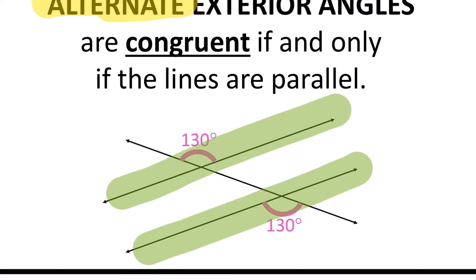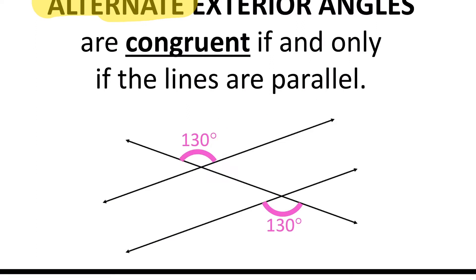Alternate exterior angles are always congruent. So you can see in this picture, this one is 130 degrees, and this one is also 130 degrees.